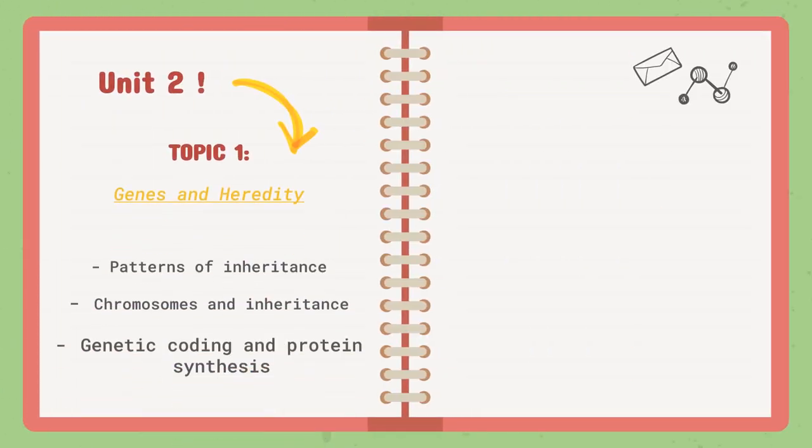In Unit 2, we are only going to talk about one topic, which is composed of three lessons: patterns of inheritance, chromosomes and inheritance, and genetic coding and protein synthesis.